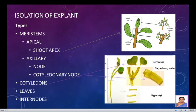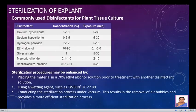Age of the explant is also an important factor — juvenile tissues respond best. The commonly used disinfectants for plant tissue culture are calcium hypochlorite, sodium hypochlorite, hydrogen peroxide, ethyl alcohol, silver nitrate, mercuric chloride, and benzalkonium chloride. The sterilization procedures may be enhanced by placing the material in a 70% ethyl alcohol solution prior to treatment with another disinfectant. This two-step sterilization procedure has proven beneficial with certain species. Using a wetting agent such as Tween 20 or 80 can reduce surface tension and allow better surface contact. Conducting sterilization under vacuum also removes air bubbles and provides a more efficient sterilization process.